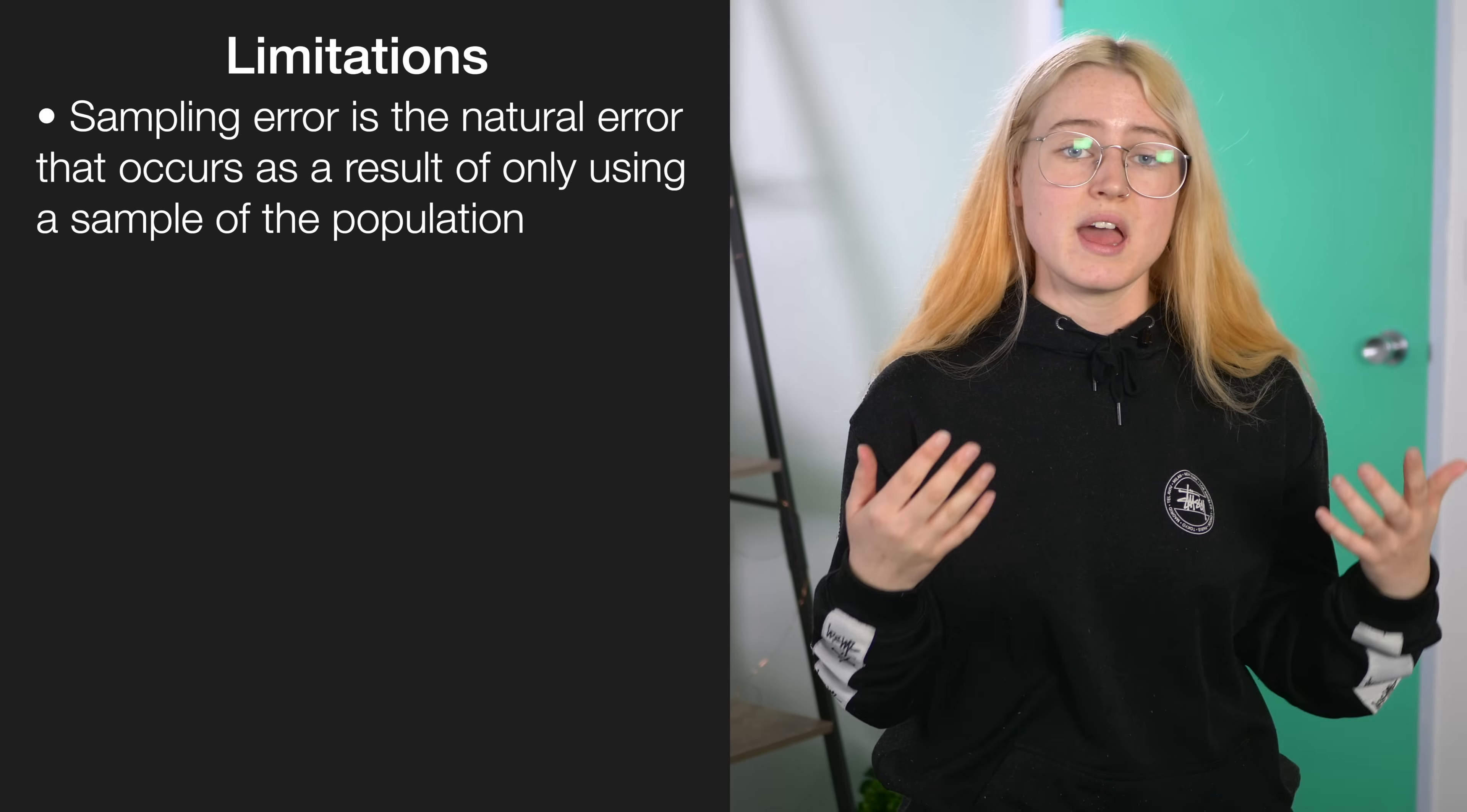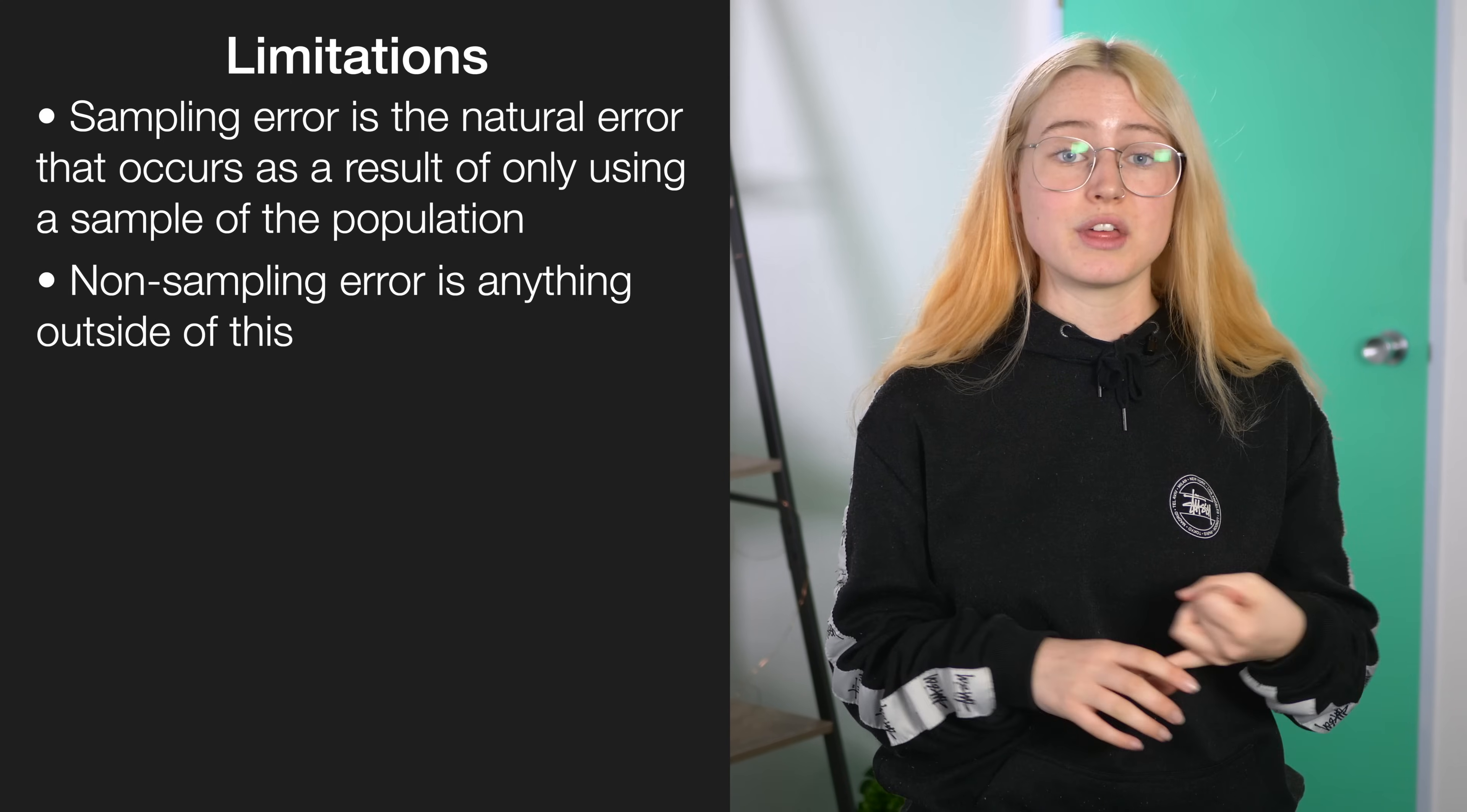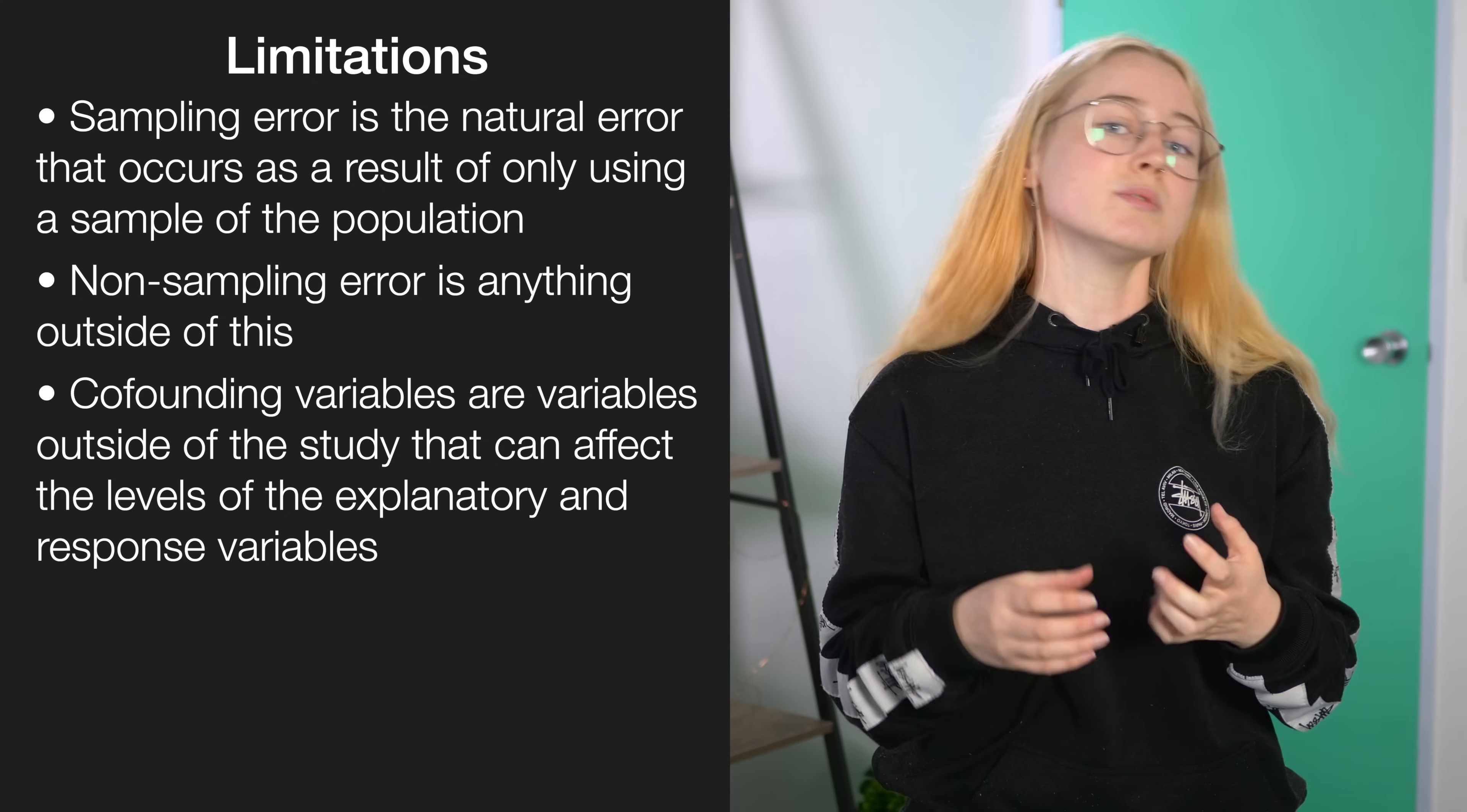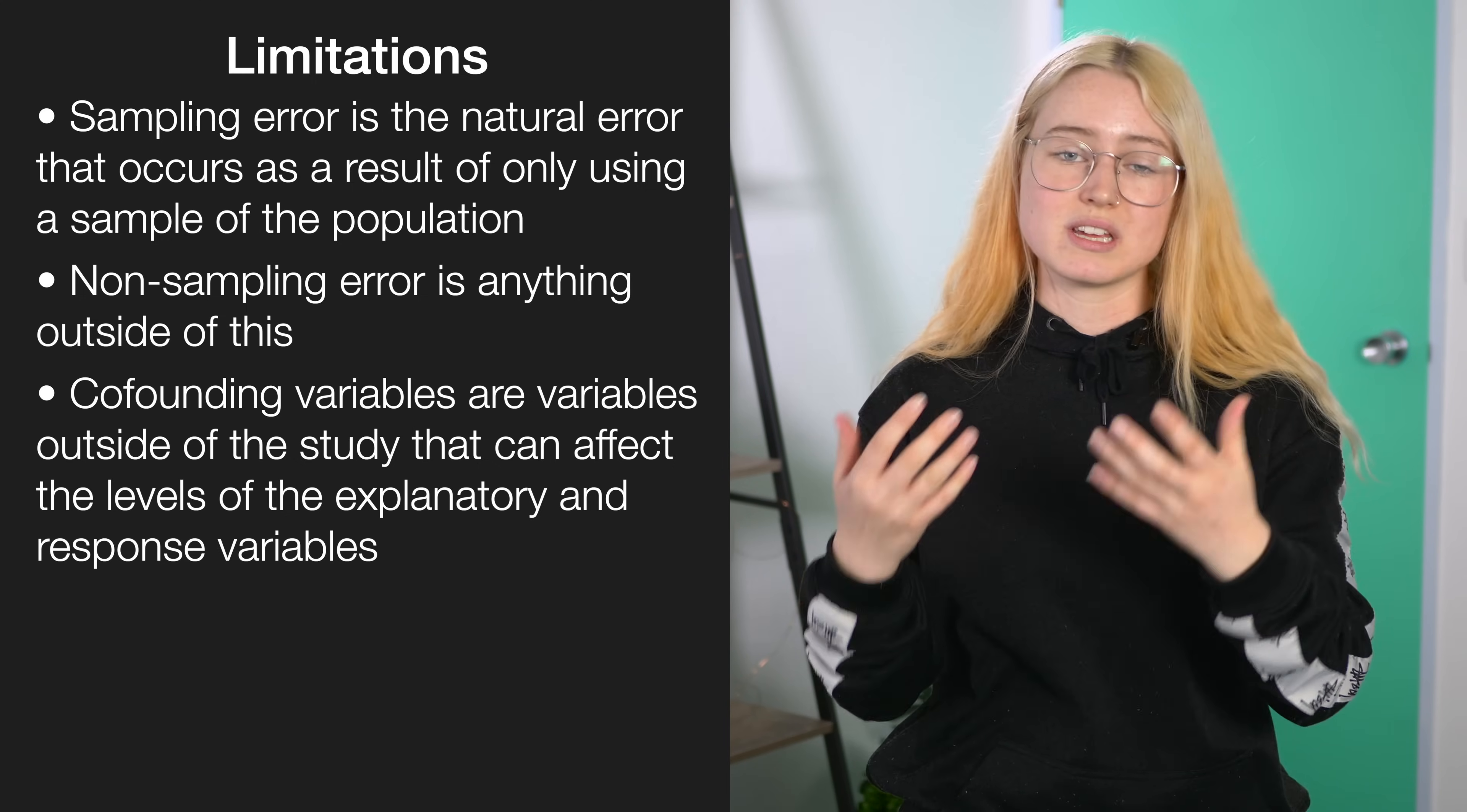Fourth, you really want to be considering your limitations. When discussing limitations, most will come down to non-sampling error. To understand non-sampling error, we need to know what sampling error is: the natural error that occurs as a result of using a sample as opposed to the whole population. The kinds of things that can be non-sampling error are confounding variables, which is almost like a third variable that manipulates your outcome that you haven't controlled for and haven't considered beforehand.